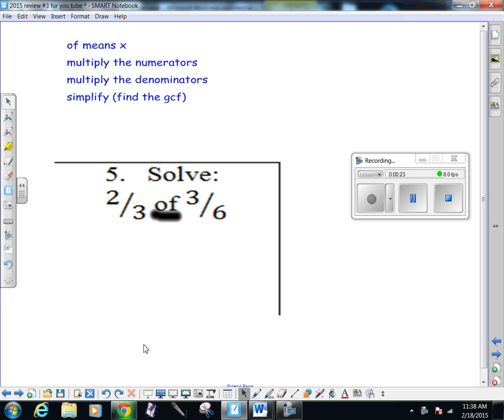I'm going to write my fractions next to each other: 2/3 times 3/6, and then I'm going to multiply. 2 times 3 is 6, and 3 times 6 is 18. I'm going to find the GCF. The GCF of 6 and 18 is 6, so I'm going to divide each of these numbers by 6. Simplify it: 6 divided by 6 is 1, 18 divided by 6 is 3.